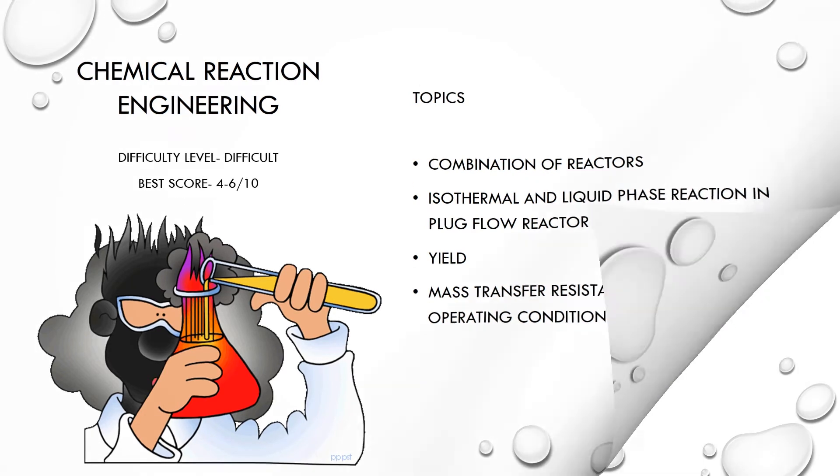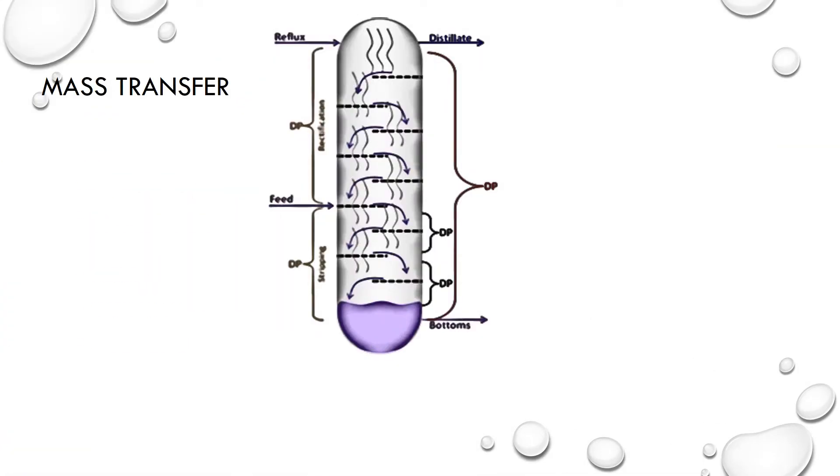Now talking about Mass Transfer, which involved topics like distillation and drying, which had relatively simpler questions in the paper. But Heat Transfer had simpler but lengthier questions with topics like heat exchangers and conduction. So we can expect a base score of 6 to 8 in both of them.